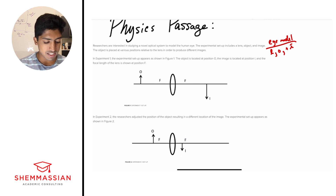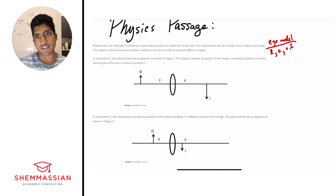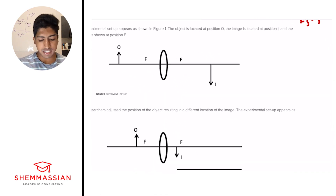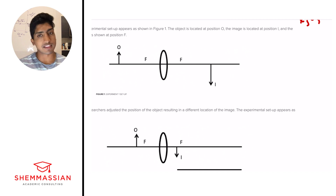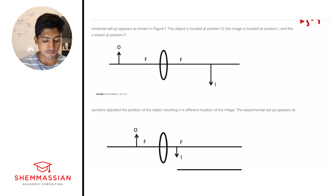In experiment one, the experimental setup appears as shown in figure one. The object is at position O, the image at position I, and the focal length at position F. This blurb doesn't give much, so we need to look at the figure. We see a thin lens diagram — an object, a lens, and an image — the type of setup from optics content review. I want you to pay attention to where the object and image are, and how far they are from the lens relative to the focal distance.